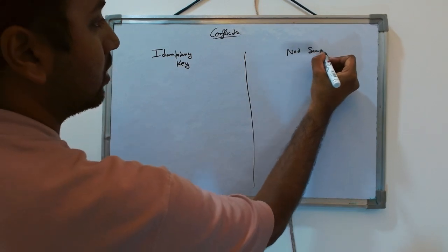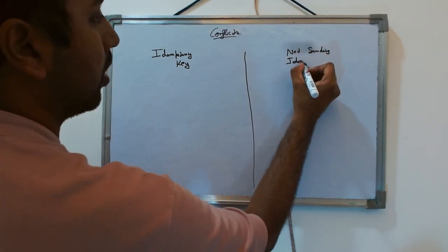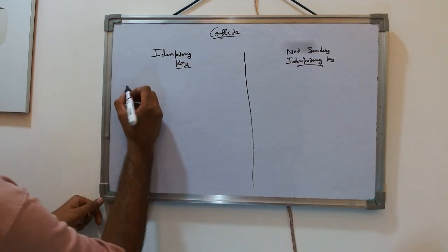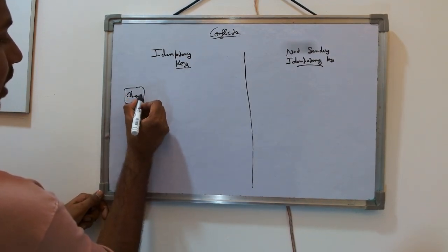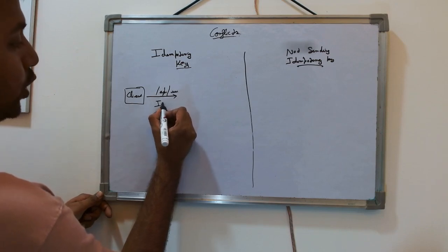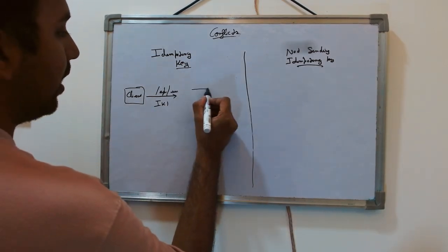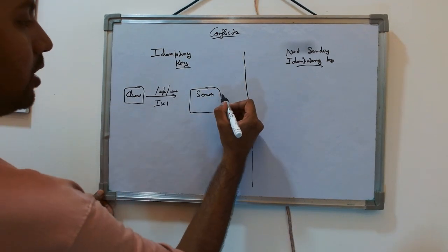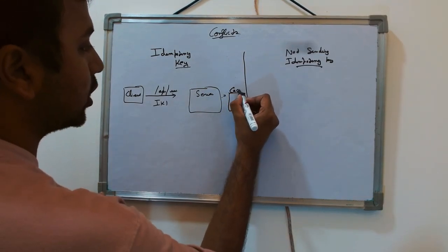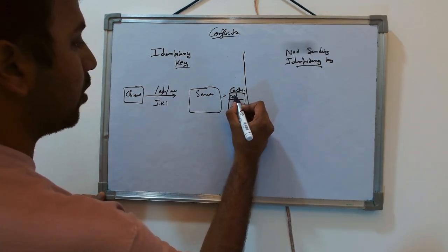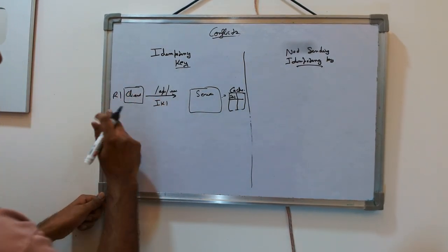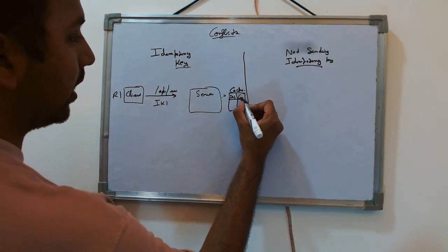There are two scenarios: the client is sending an idempotency key, or they are not. When the client sends an idempotency key, whenever the client calls a particular operation — say 'api/user' — it also sends a unique idempotency key. When the server receives it, it creates an entry in cache with that idempotency key and marks the status as 'created' or 'in progress' as it starts working on the request.